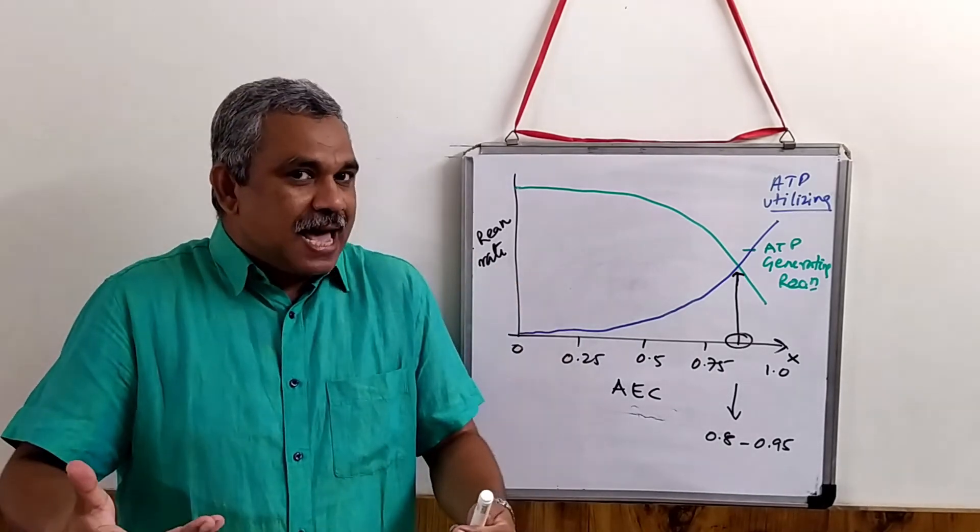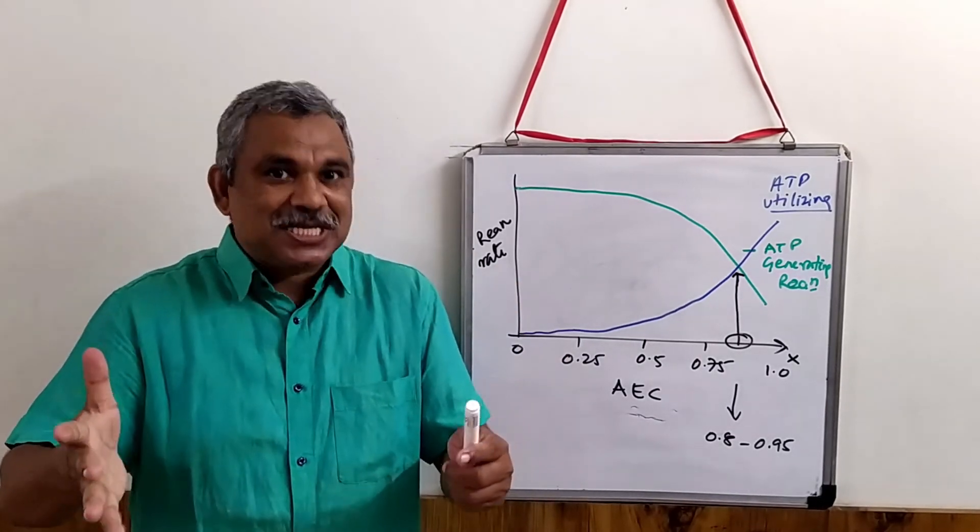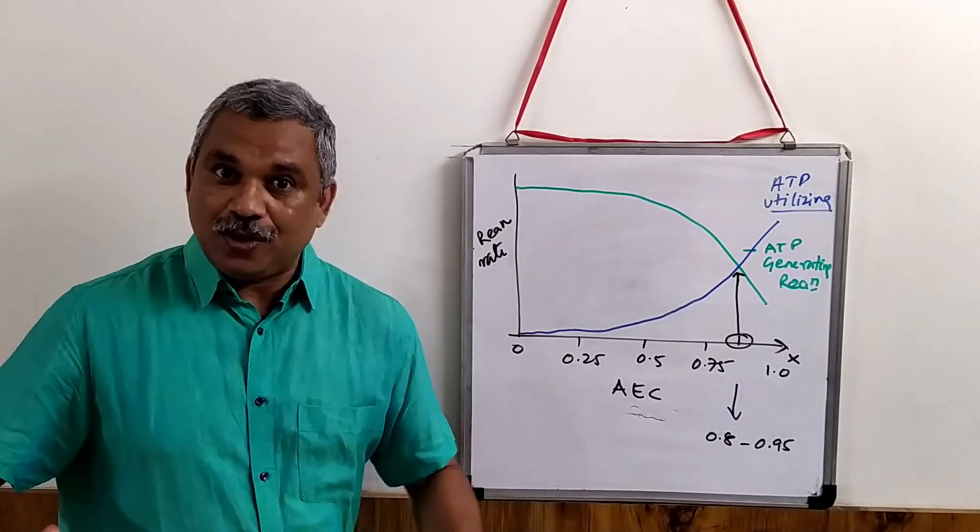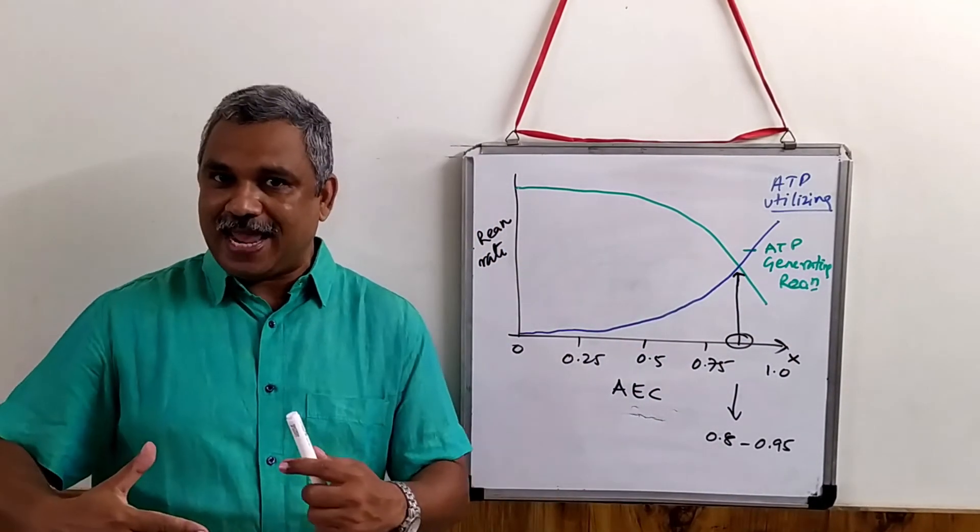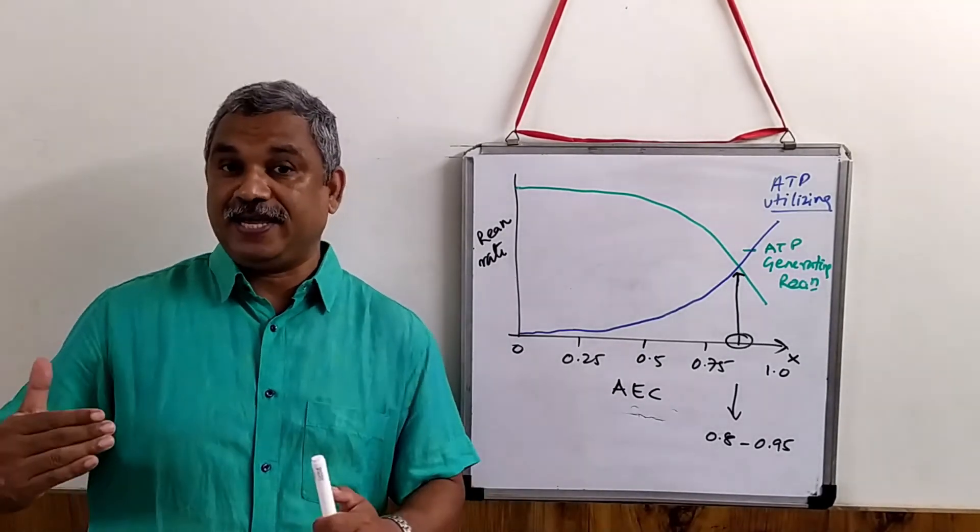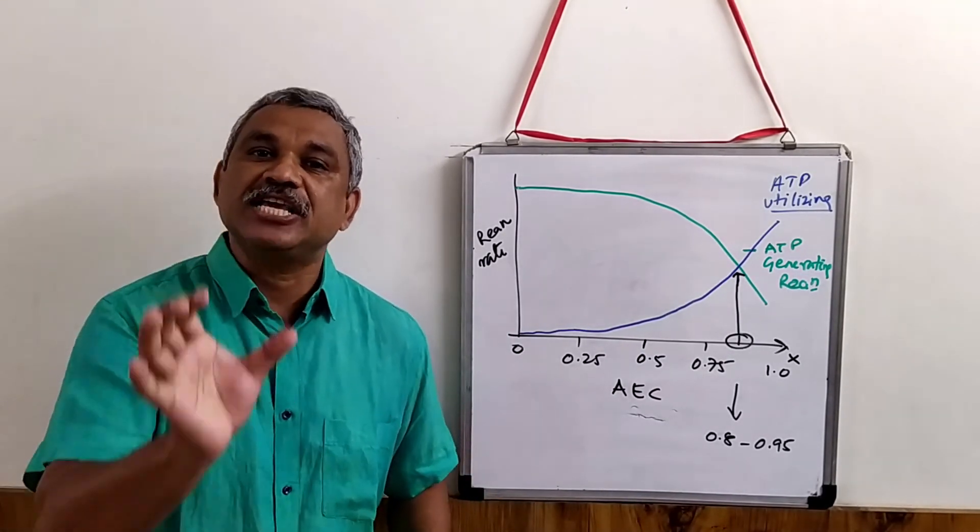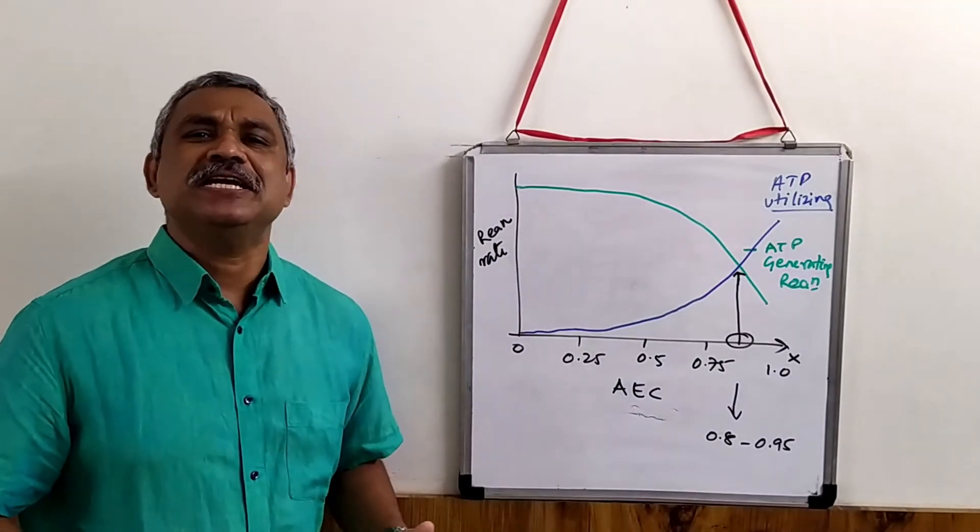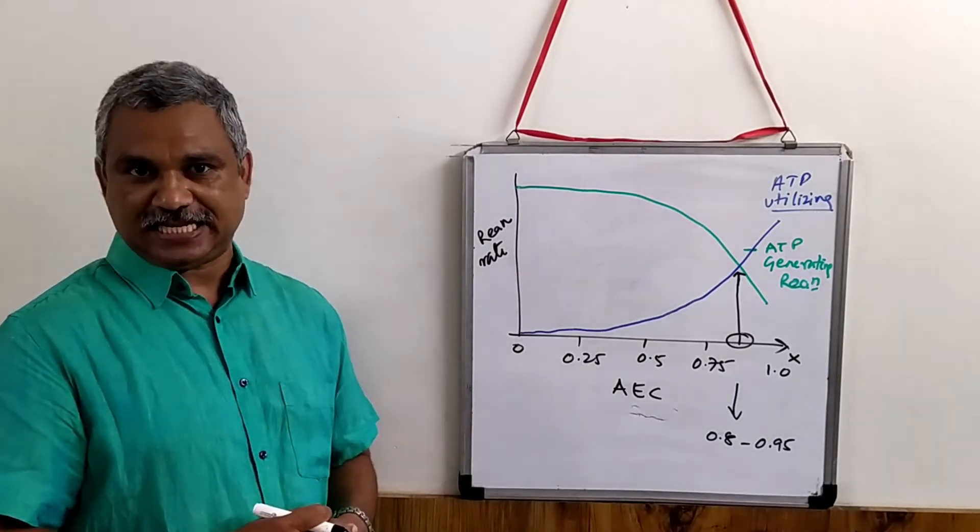It also means that all our cells are functioning at this level. So it is not going below 0.8, nor it is exceeding beyond 0.95. So that is the region in which the cells are operating. We have a very interesting reaction that happens in a cell.